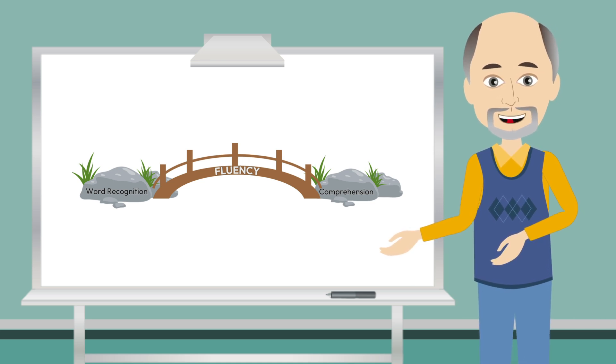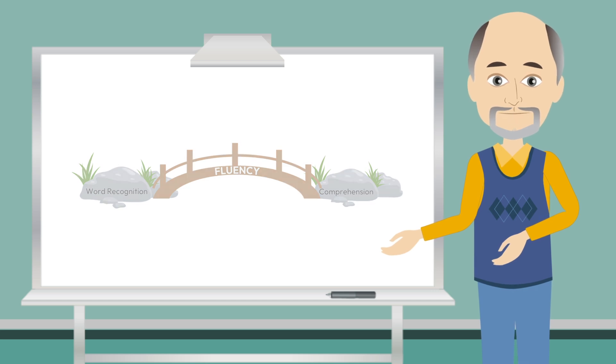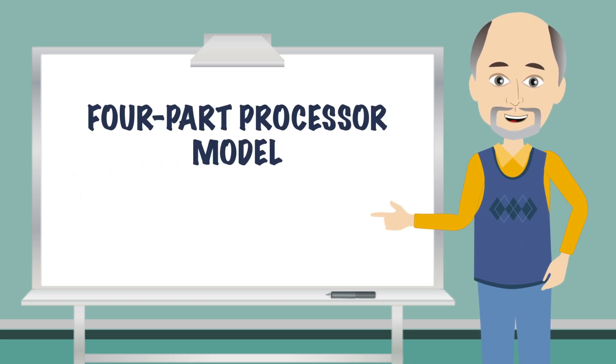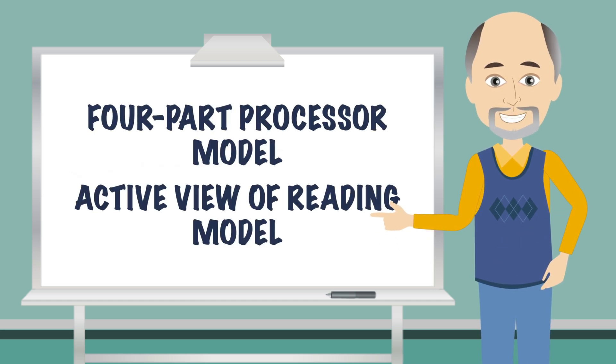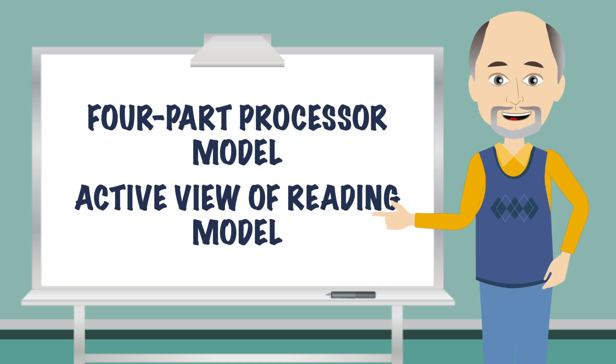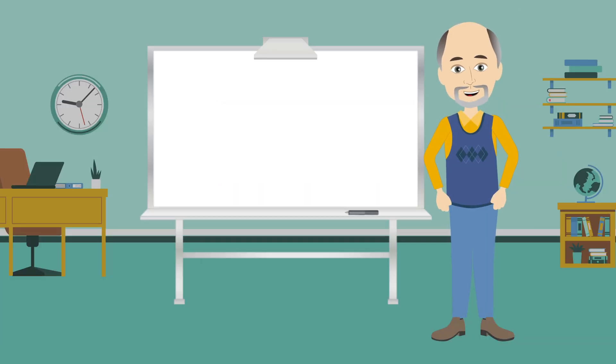Fluency occurs when a reader bridges or connects the execution and integration of their word recognition and language comprehension skills at the speed of spoken language. The four-part processor model and the active view of reading model both reiterate this working together and bridging notion of fluency.